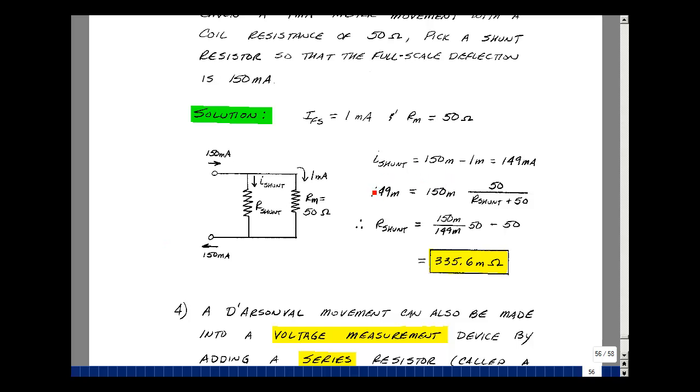This should equal the current in the shunt resistance, which is 149 milliamps. Let's solve for the shunt. Multiply these two, divide by 149 milliamps, bring this to the other side of the equation, and subtract the 50. I get 335.6 milliohms.